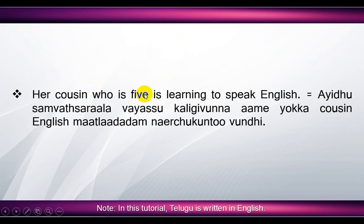'Her cousin who is five is learning to speak English' means 'aithu samvatsarala vayassu kaligina aamayokka cousin English maatlaadadam neerchukuntu undi'. Here, 'her cousin' means 'aamayokka cousin'. 'Who is five' means 'aithu samvatsarala vayassu kaligi unna' — 'five' means 'aithu', and since we're talking about age we use 'samvatsarala', which means 'years'. 'Is learning' means 'neerchukuntu undi' for female, 'neerchukuntu unnaadu' for male. 'To speak English' means 'English maatlaadadam'.